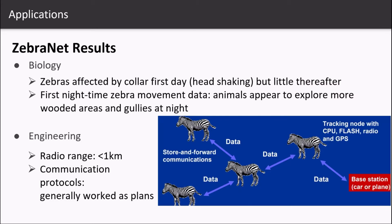The first biological result was that zebras were not used to wearing the collar, so they got irritated initially but got used to it later. It was interesting to note that all zebras appeared to explore more wooded areas and gullies at night. From an engineering point of view, it was discovered that the radio controller range was within one kilometer and the communication protocol worked quite well as expected.